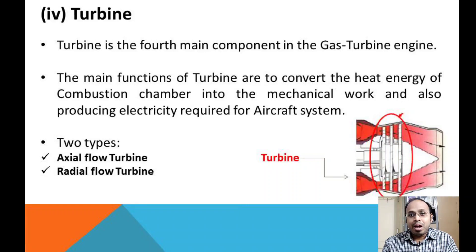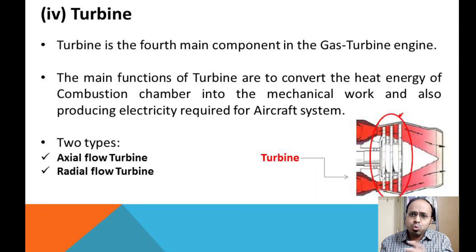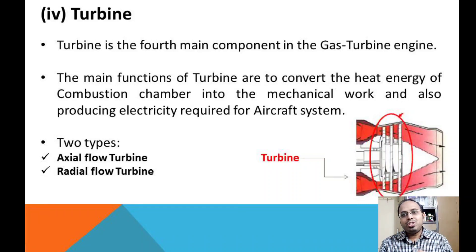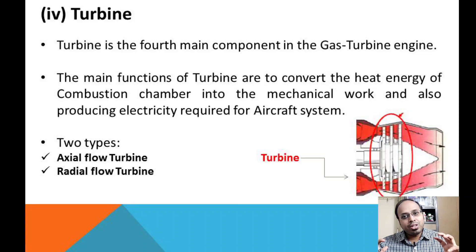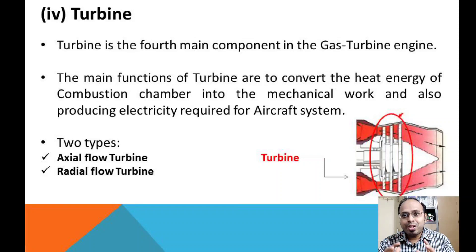Hot gases from the combustion chamber flow through the turbine, causing the turbine blades to rotate and produce power output. This power output is used to rotate the compressor. There is no other means of rotating the compressor — it is driven by the turbine. The compressor then compresses the air to the required pressure ratio before sending it into the combustion chamber.